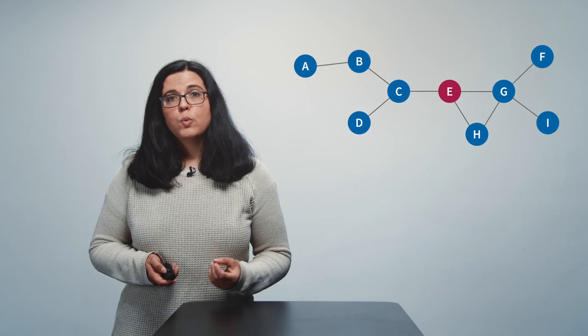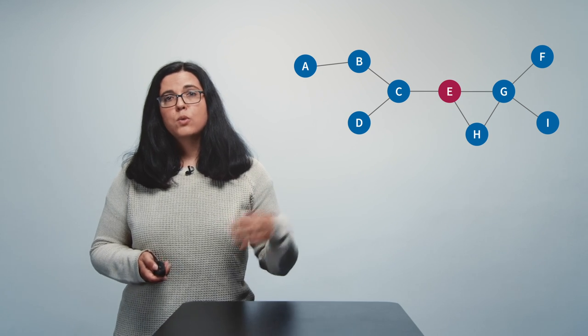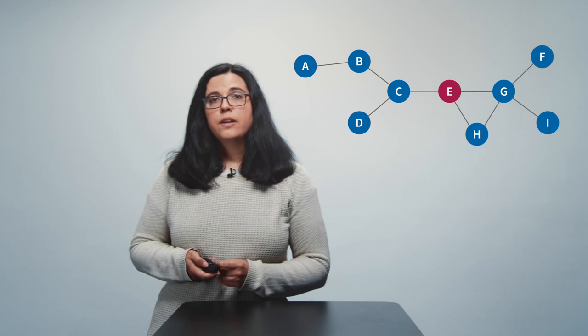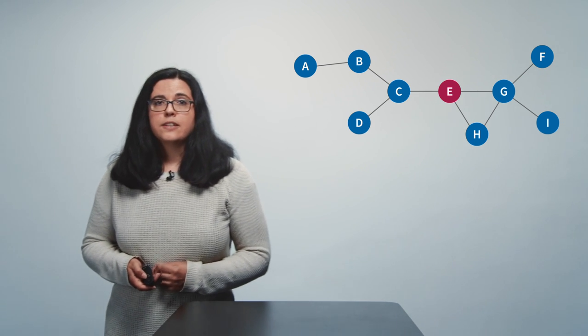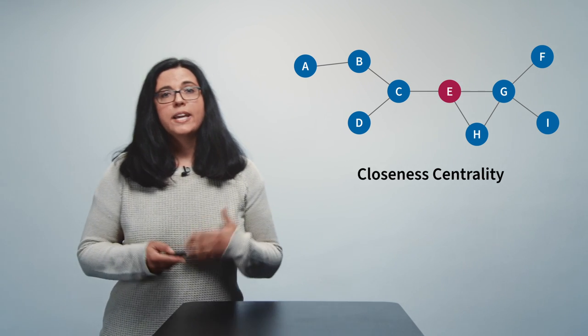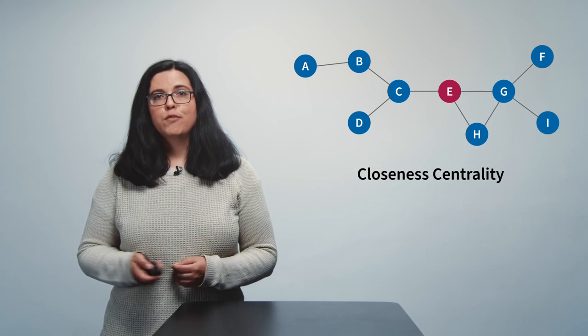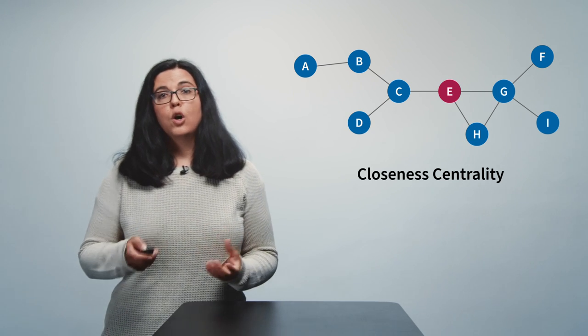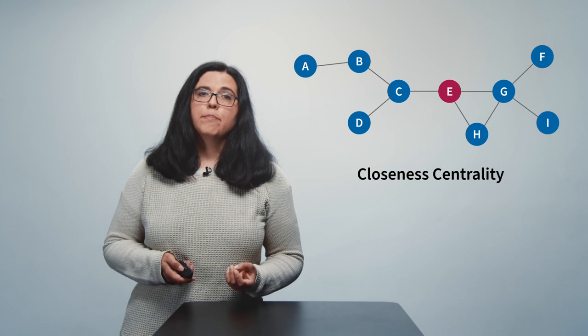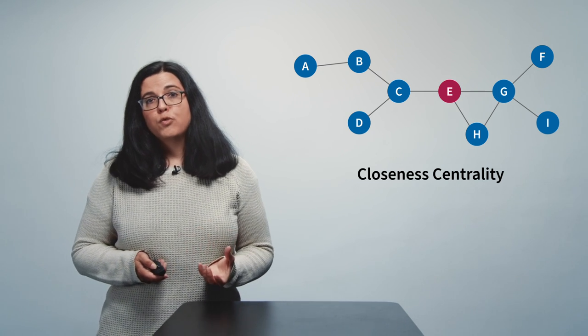If you look at the graph in another way you may have come to the conclusion that node E in the middle is the most influential node. After all it's the node which can reach all other nodes in the network with the lowest numbers of steps. So it's the node that is closest to all the other nodes in the network. And this is another measure of centrality we call closeness. Actually we calculate the inverse of the sum of the shortest path distances from a given node to all other nodes in the network. And this kind of centrality is a measure of independence from information flow of others.